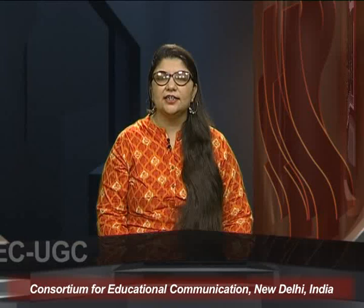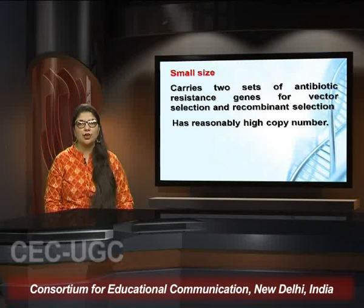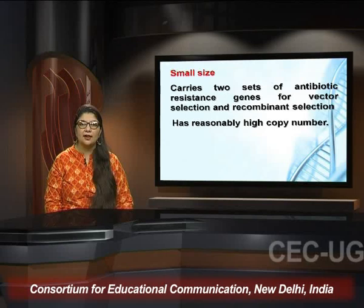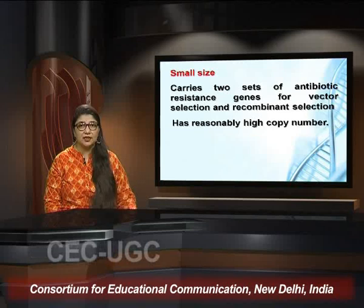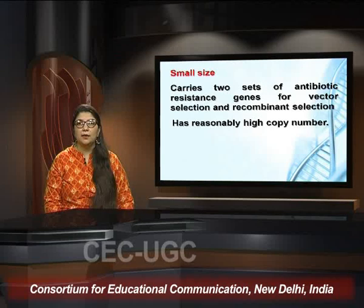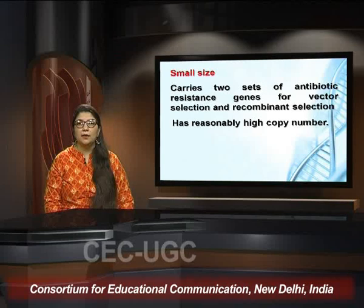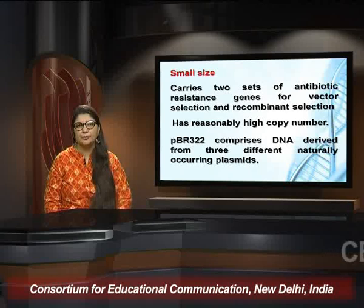We discussed the blue-white screening method for recombinant selection. PBR 322 carries two antibiotic resistance genes for vector and recombinant selection and has a reasonably high copy number. Copy number is the number of copies of a plasmid present in a particular cell — the higher the copy number, the more vectors containing your gene of interest you can isolate from a single cell, which is very important for cloning.